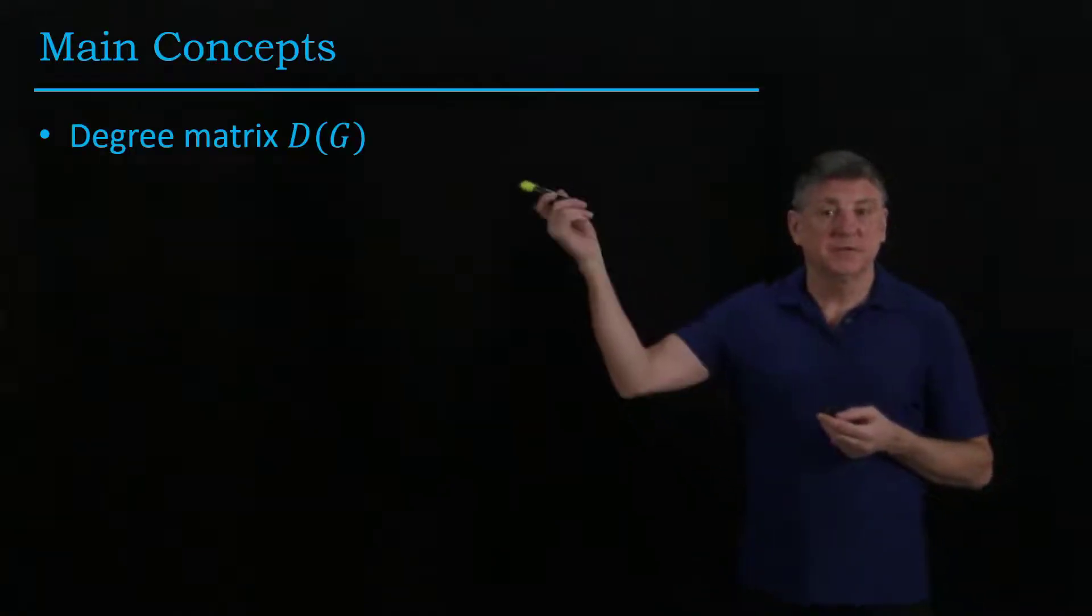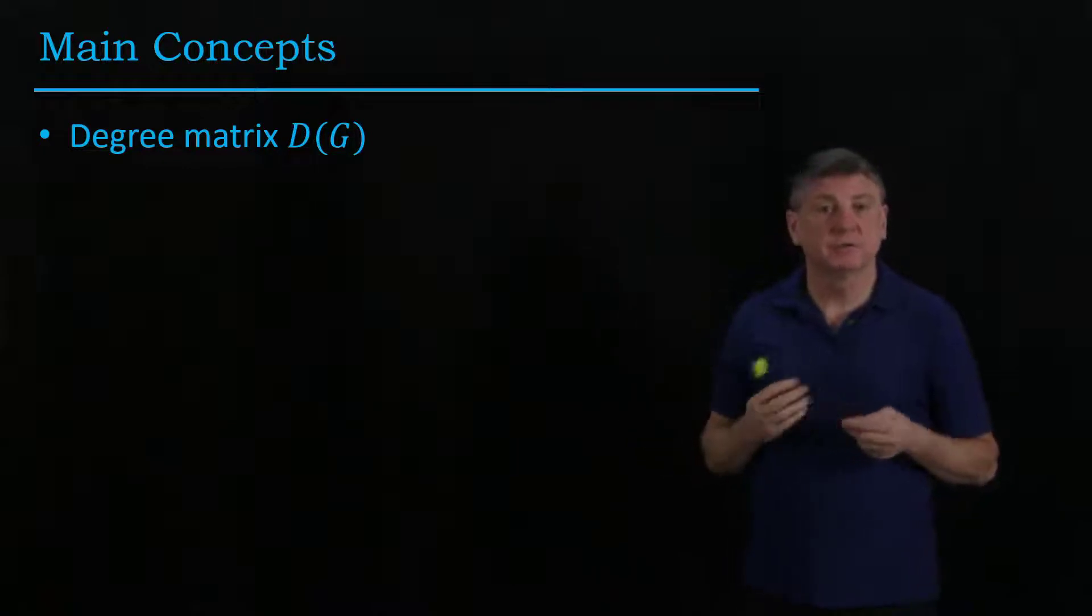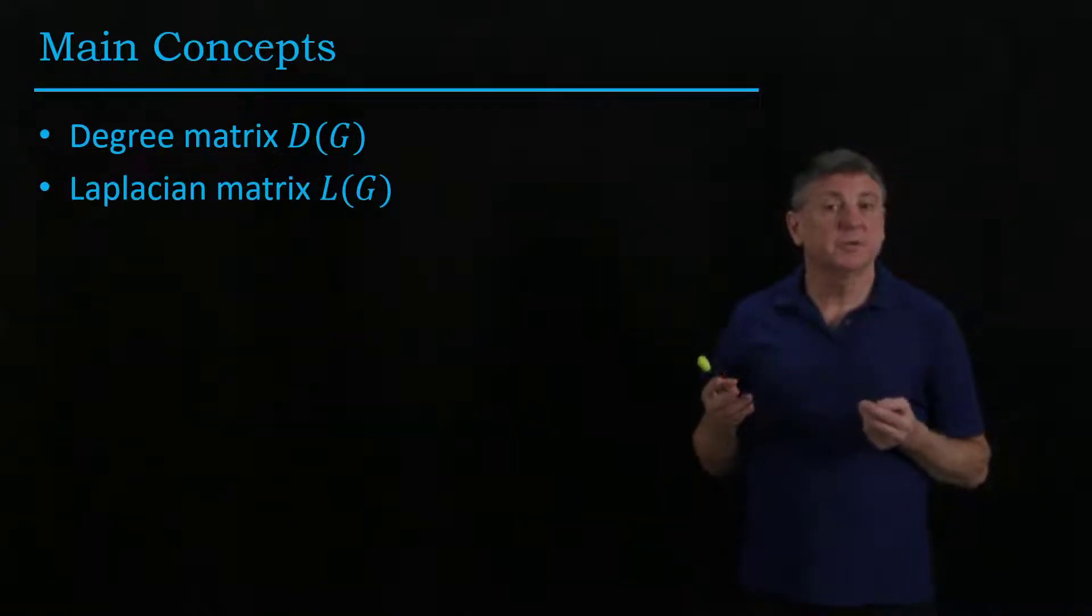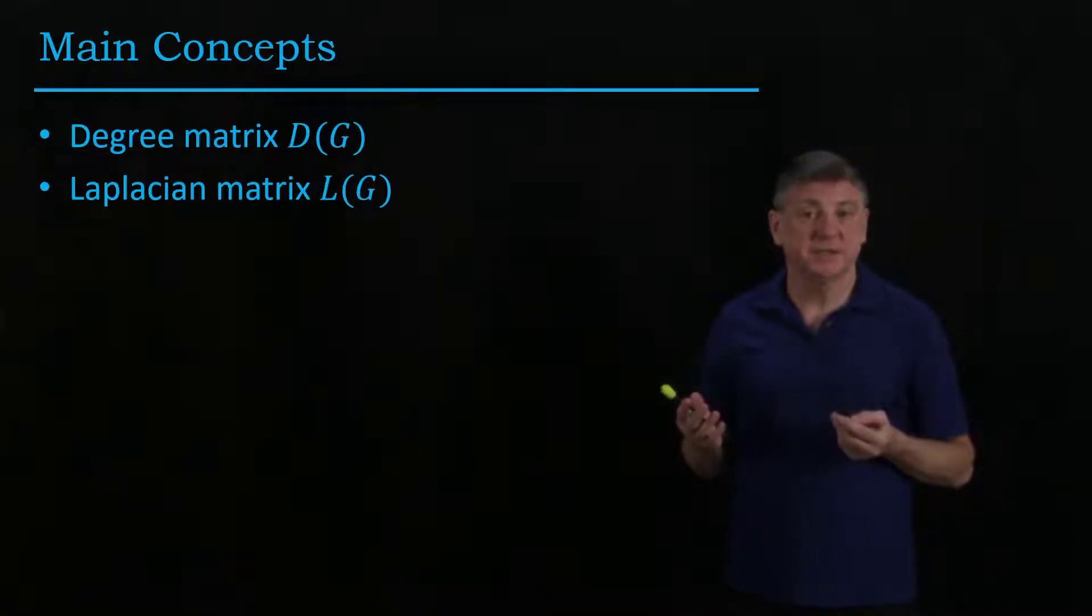We'll discuss the Laplacian matrix and the Fiedler vector. The main concepts for this are the degree matrix, closely related to the degree vector that we found, and the Laplacian matrix, which combines the degree matrix and the adjacency matrix.